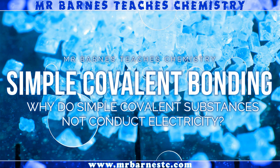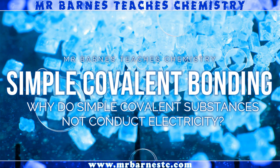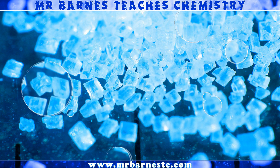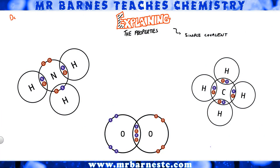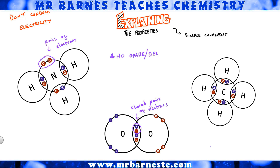So let's get back to the point of this video: why do simple covalent compounds not conduct electricity at all? We have shared pairs of electrons. There are no spare electrons — no delocalised electrons — and no charged particles that can move. So there's nothing to carry a charge. You get one mark for saying there are no spare or delocalised electrons, and one mark for saying nothing can carry a charge.